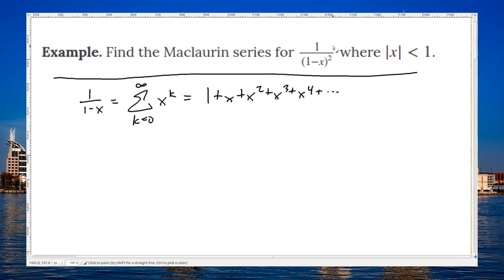Okay, so if I want to find the Maclaurin series for this fraction, I can note that, well, that looks like the derivative. Square to the bottom, and then low d high, which is 0 minus high d low, negative, negative 1 gets you positive 1.